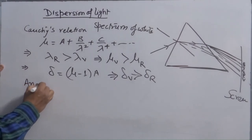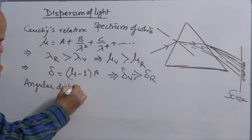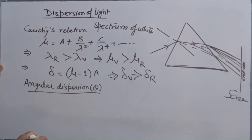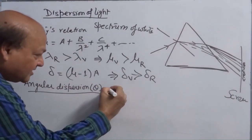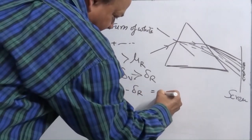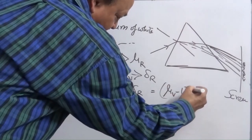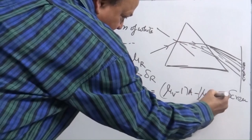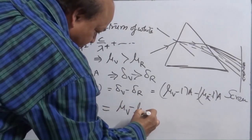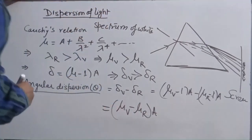There are two terms we have to understand. Number one, angular dispersion. Angular dispersion for given prism is the difference in angle of deviation of two extreme colors. Violet is maximum, red is minimum. So delta V minus delta R. Use this relation and form equation for violet and red. You can write mu V minus 1 into A minus mu R minus 1 into A. Finally you obtain an expression mu V minus mu R into A. This is angular dispersion.